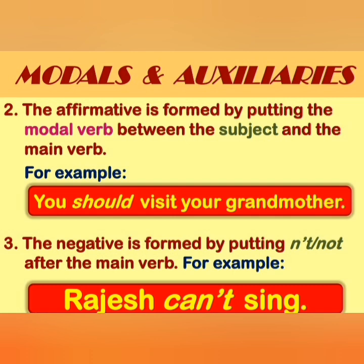The negative is formed by putting 'n't' or 'not' after the modal verb. For example, the negative of 'can' is 'can't' — written with an apostrophe t. When we use verbs of perception and thinking like see, hear, smell, taste, feel, understand, and remember, we can use 'could,' even if the past situation is a specific situation.